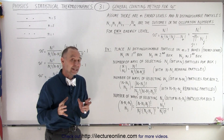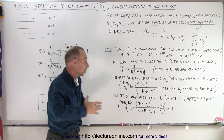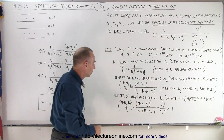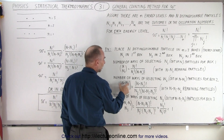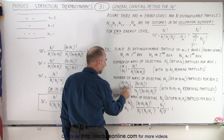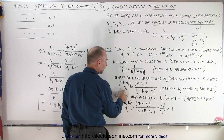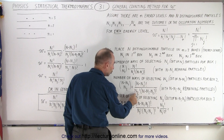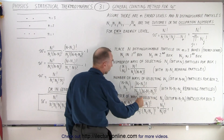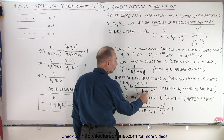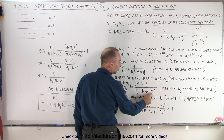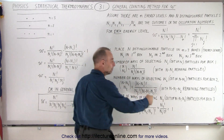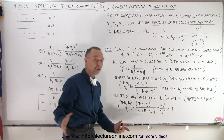Now we want to select, out of the remaining N minus n1 particles, how many will be in the second box. Here we have N minus n1, the remaining number of particles, and n2 particles in the second box, written as N minus n1 factorial divided by n2 factorial times what's remaining. We started with N, took some out for the first box and some for the second box, so N minus n1 minus n2 is the remaining number of particles.